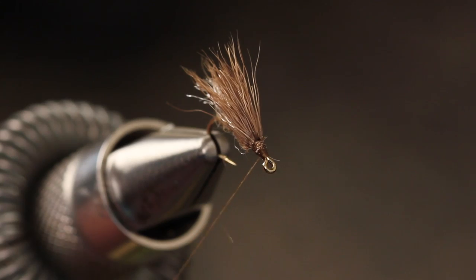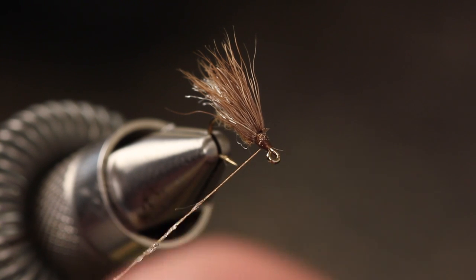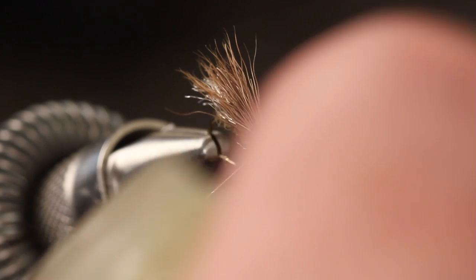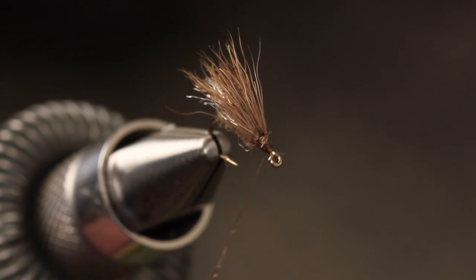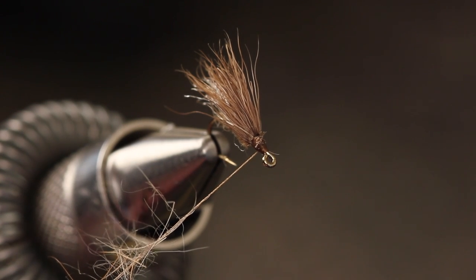Take wraps to cover up the butt ends a little bit. Apply a thin skim of ultra tacky wax to about an inch and a half of your tying thread. Lightly, touch dub the thread with some natural hair's mask dubbing.